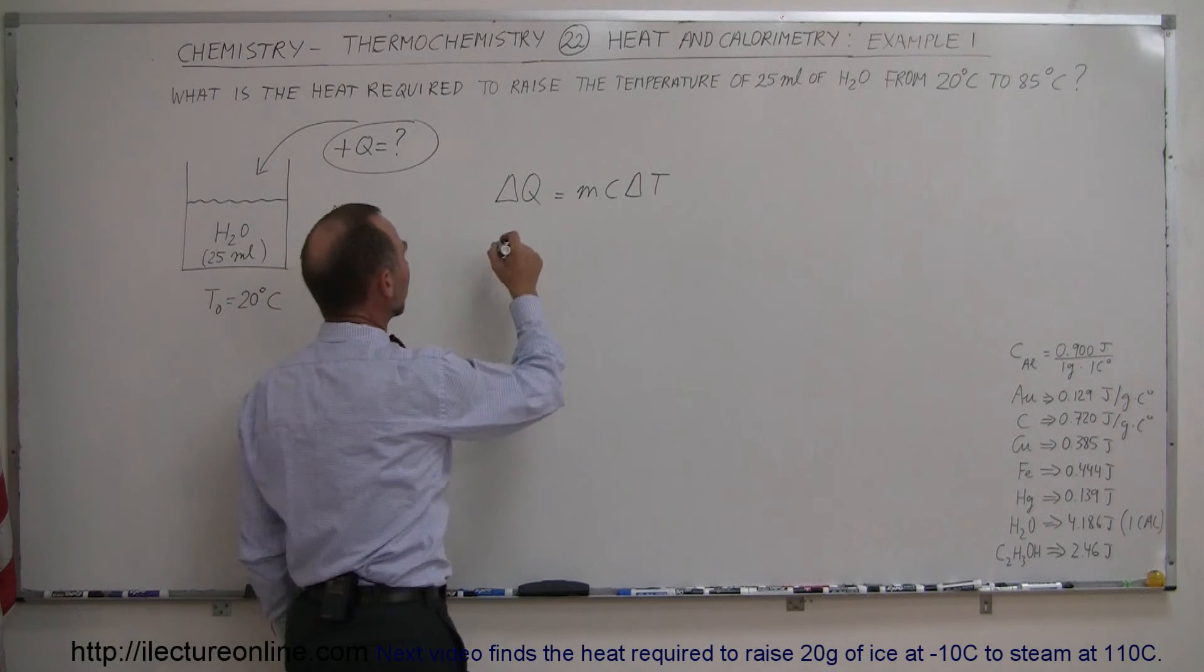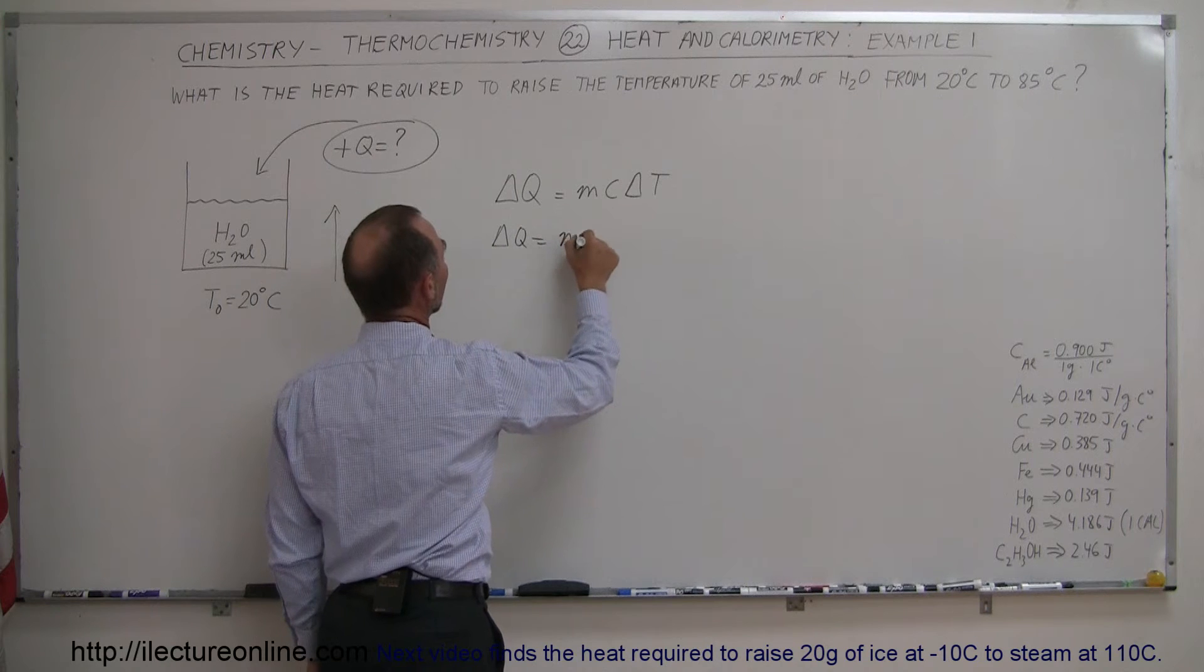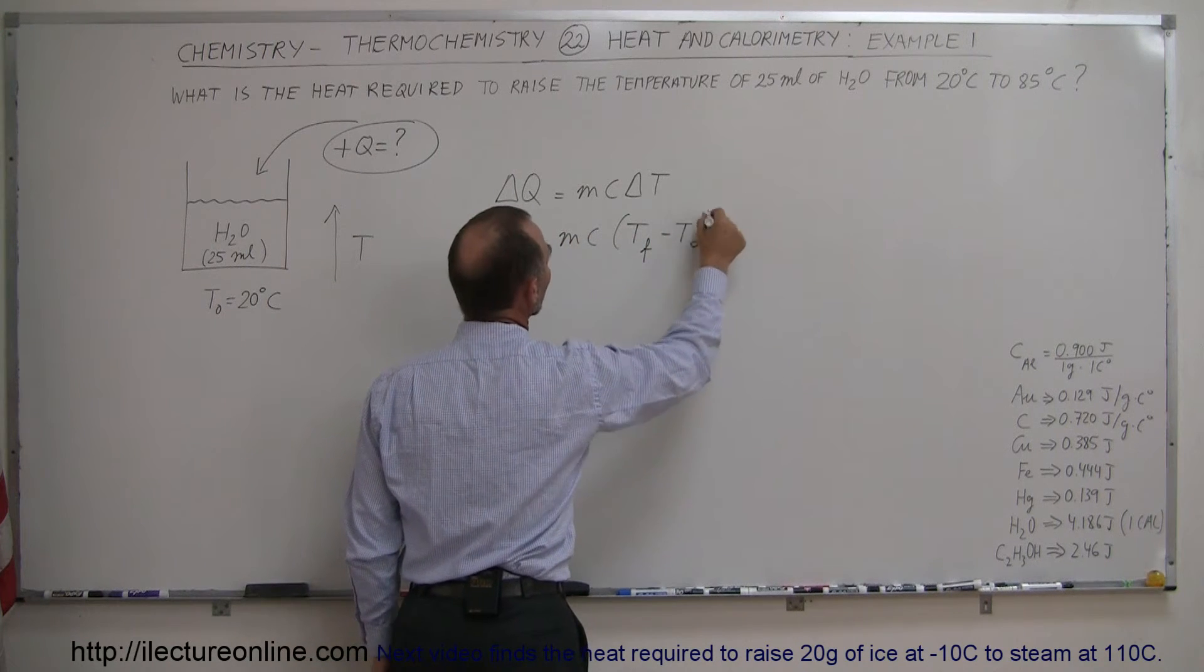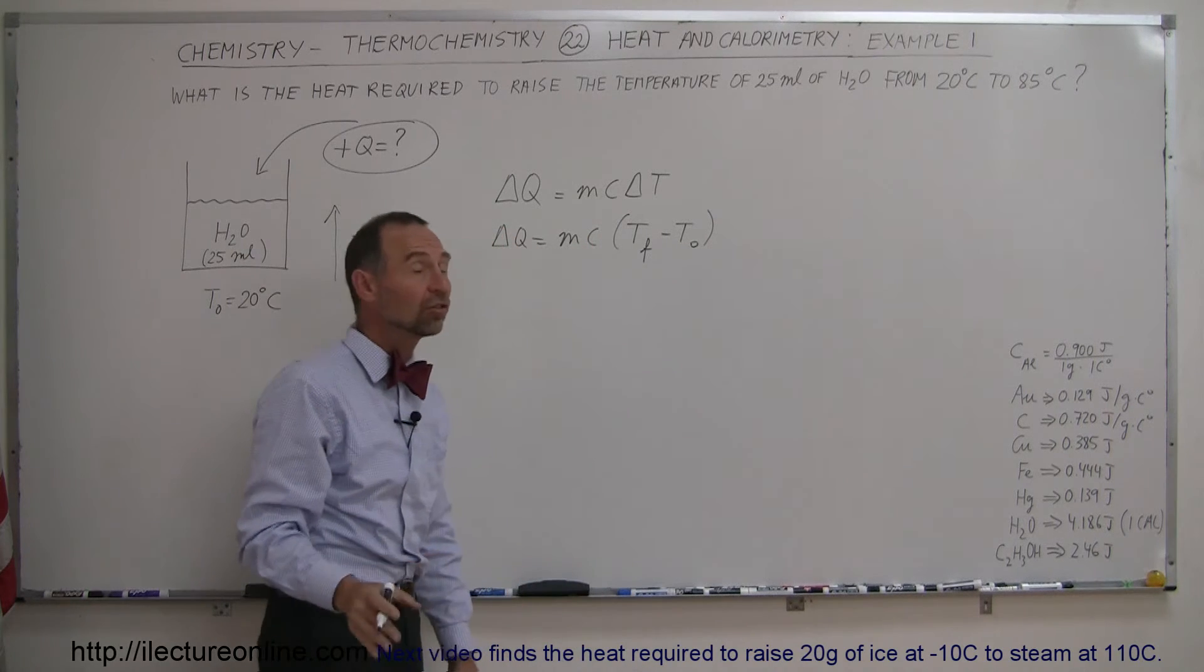Now we can rewrite this equation as delta Q is equal to mc times the T final minus T initial, so that's what we call the change in the temperature.